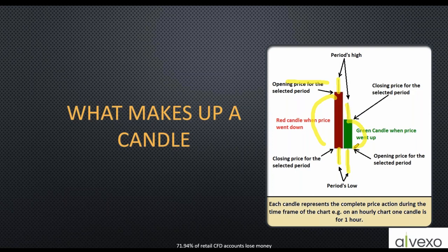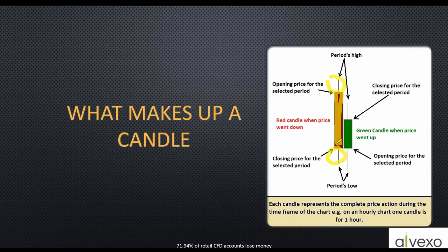If you imagine this candlestick, it shows the different tugs and positions of the two teams over the river. These wicks are very important because they tell you about the strength generated during that session. The length of the body also tells you something about that tug of war - a very long body means one team pulled the other almost all the way across before they pulled back. A short body means there was movement but little net movement.